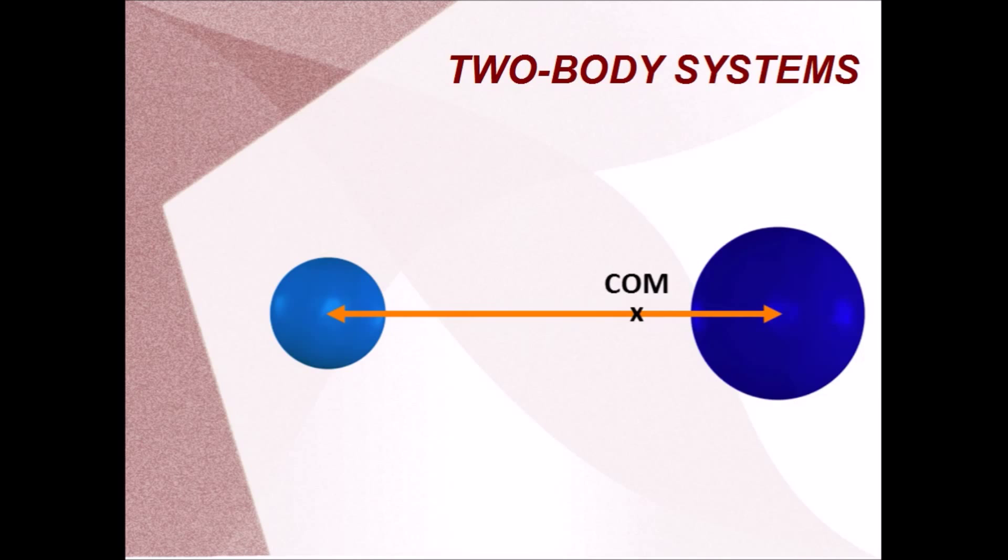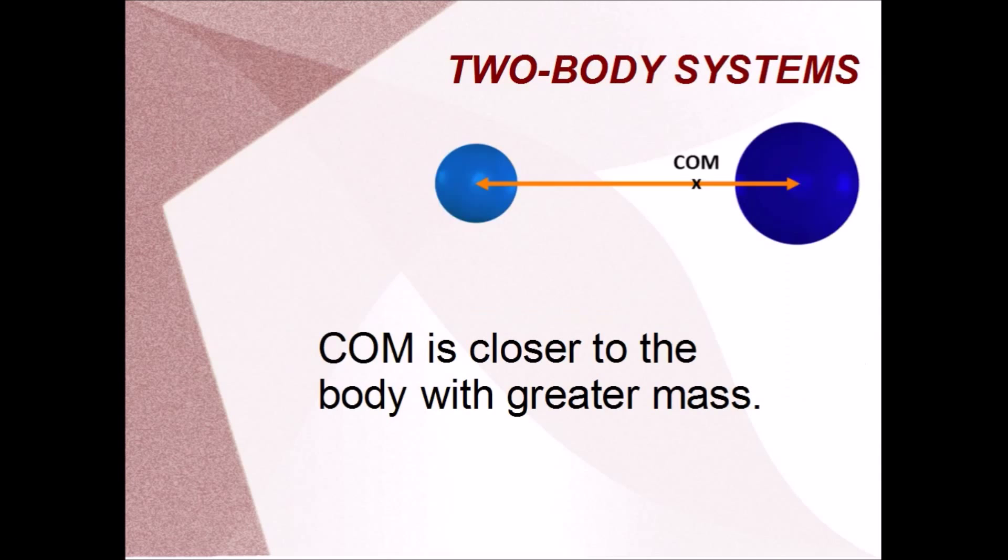The center of mass is the one point that all the mass in the system is concentrated around. So it's logical for it to be close to the more massive sphere. In fact, the ratio of masses is just the inverse of the distances. If you like fractions, this should be quite intuitive.